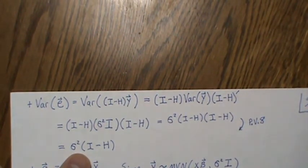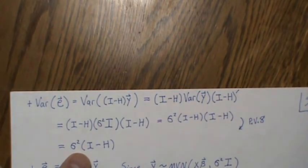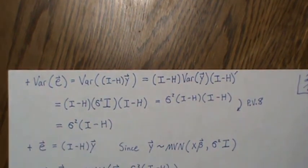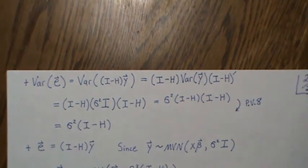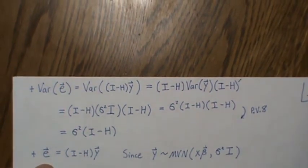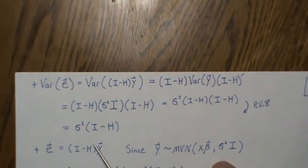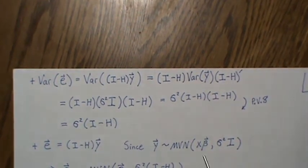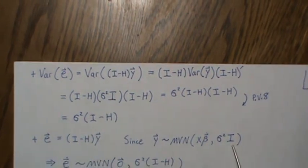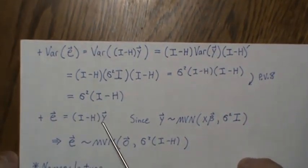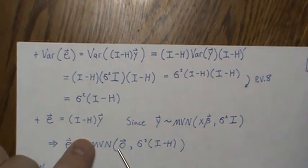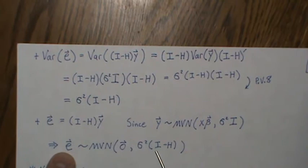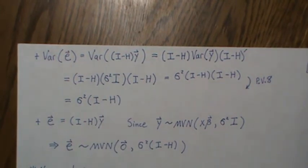This variance-covariance matrix contains every result we derived over three pages — it's remarkable, and I recommend doing the multiplication at least once. For normality: e = (I − H)Y, and Y is multivariate normal Xβ, σ²I. Since e is a linear transformation, e is multivariate normal with mean zero and variance σ²(I − H).